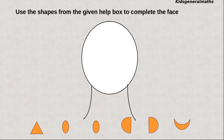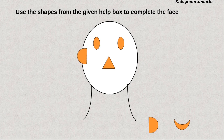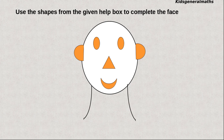Next we are going to complete this face using these shapes. First triangle. So the triangle should be placed as nose. Next oval. So oval should be placed as eye. The next oval should be placed as the next eye. Semi-circle should be placed as ear. The next semi-circle should be placed as the other ear. Then this shape should be placed as mouth. So we have completed this face.